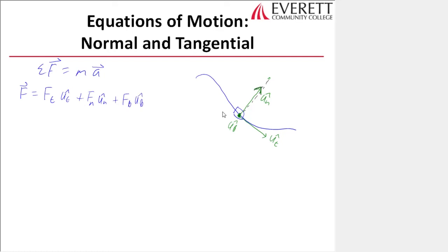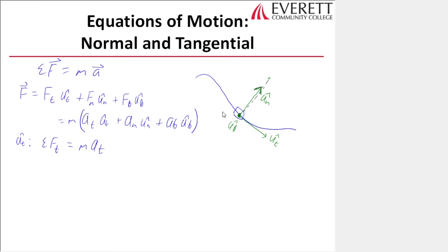That force vector equals mass times acceleration in T times UT, plus acceleration in N times UN, plus acceleration in B times UB. From that vector equation we get three scalar equations: sum of forces in UT equals mass times AT; sum of forces in UN equals mass times AN; and sum of forces in UB equals mass times AB.